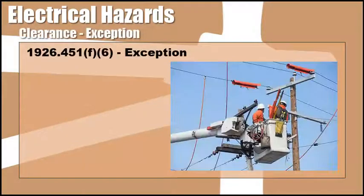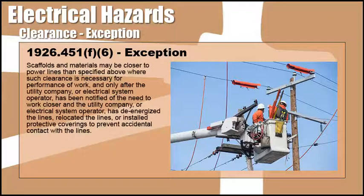Exceptions to 1926.451(f)(6) are as follows: scaffolds and materials may be closer to power lines than specified above when such clearance is necessary for performance of work, and only after the utility company or electrical system operator has been notified of the need to work closer, and the utility company or electrical system operator has de-energized the lines, relocated the lines, or installed protective coverings to prevent accidental contact with the lines.